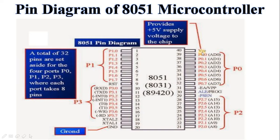Port 2, that is pin number 21 to pin number 28, P2.0 to P2.7. Port 2 is used to access external memory and also holds the high order address, A8 to A15. Then pin number 29, that is PSEN (program store enable signal). It is an active low output control signal used to activate the enable signal of external ROM or EPROM memory, and is used to read the program code in ROM memory.